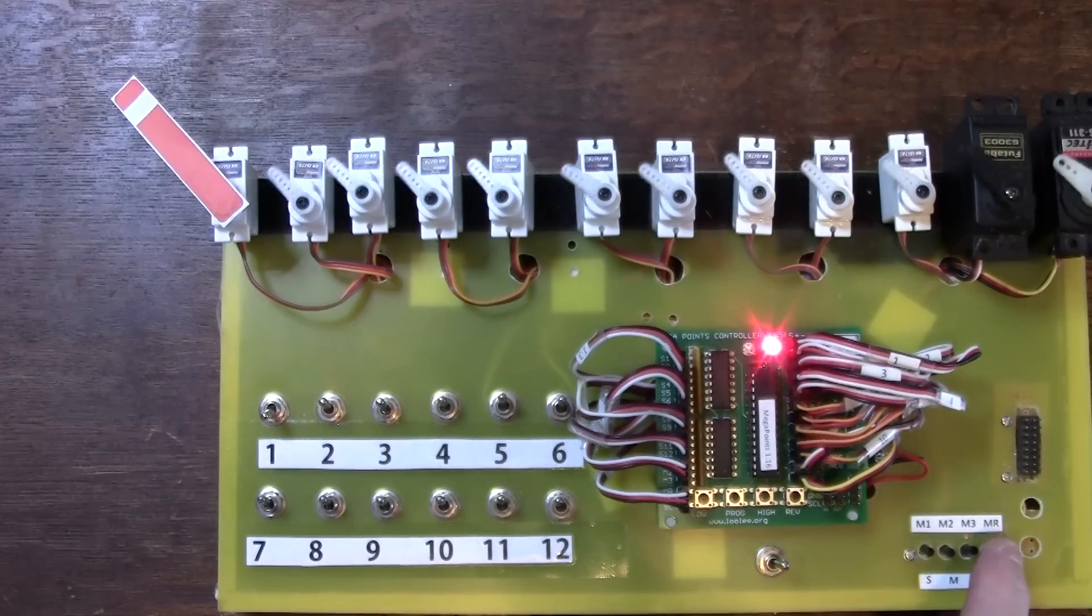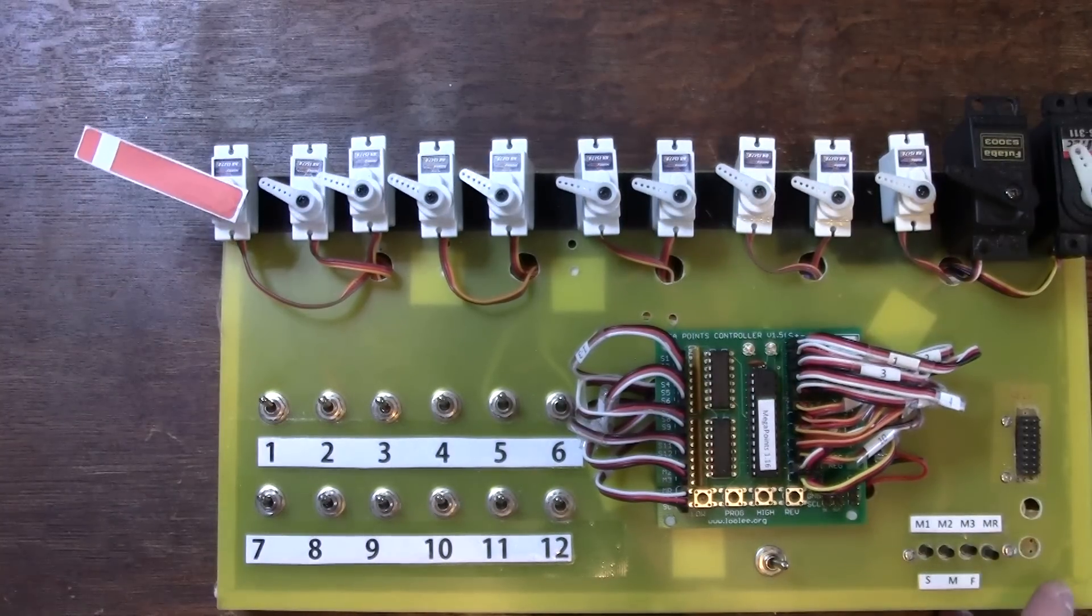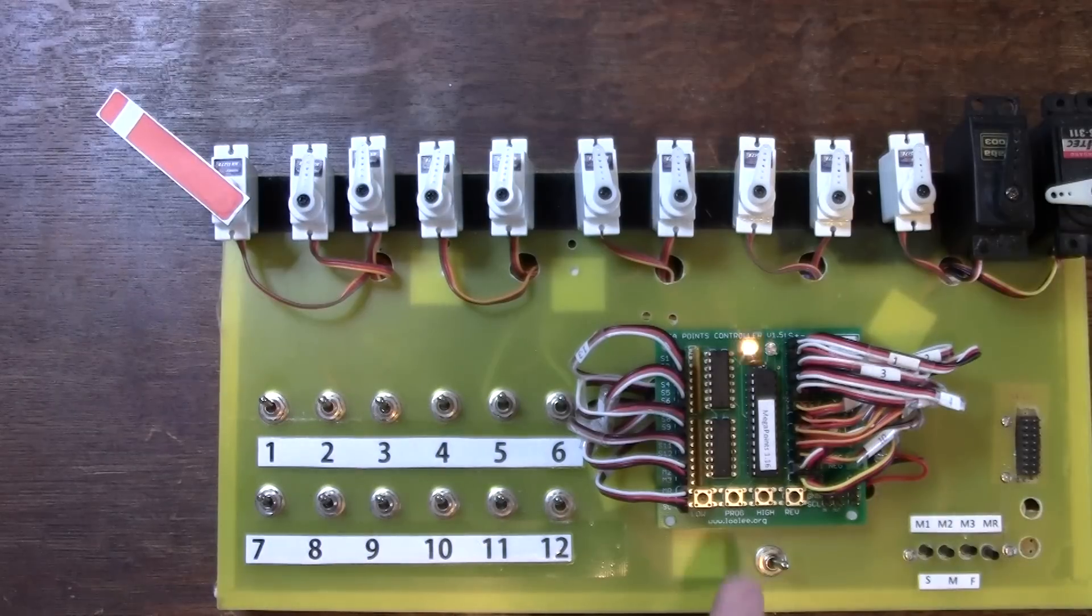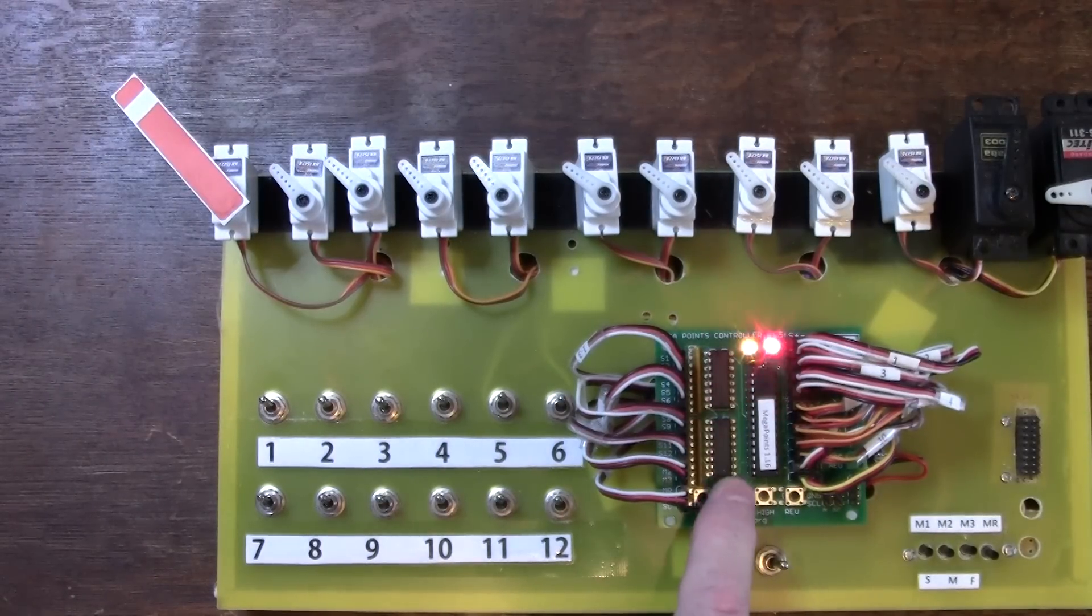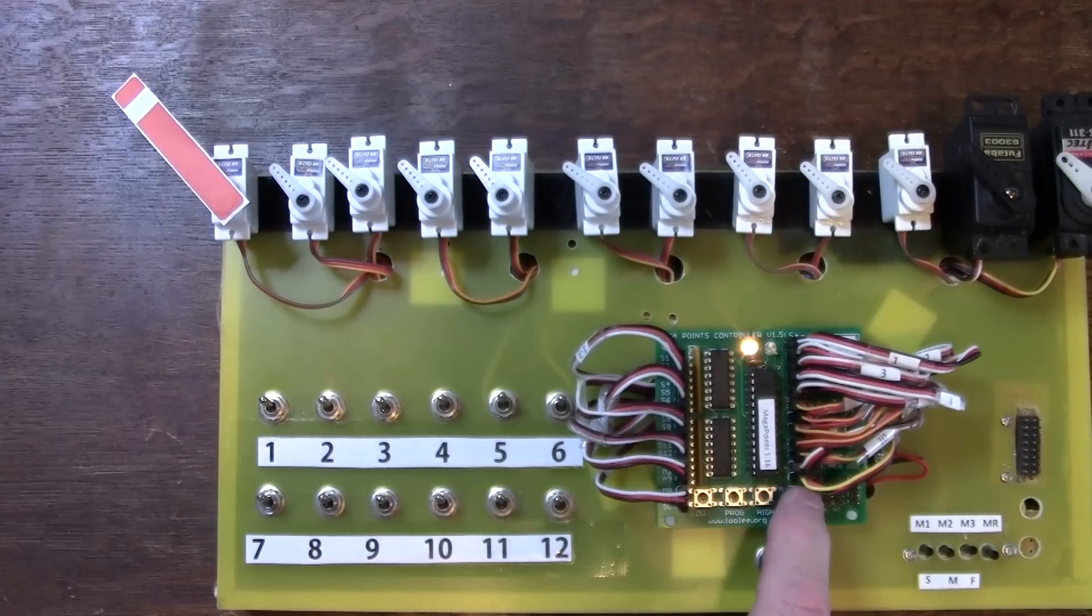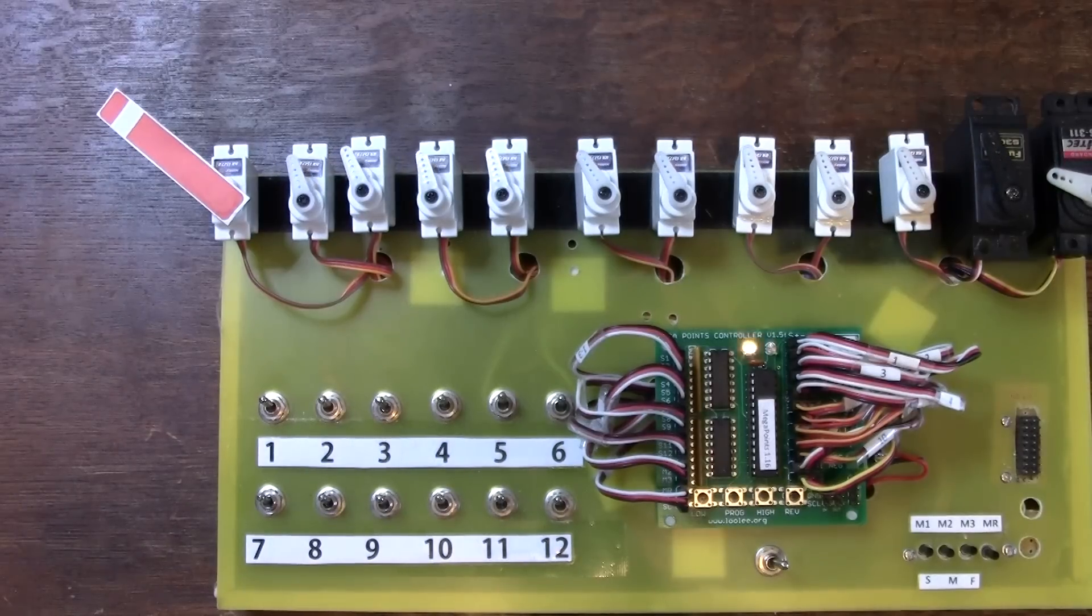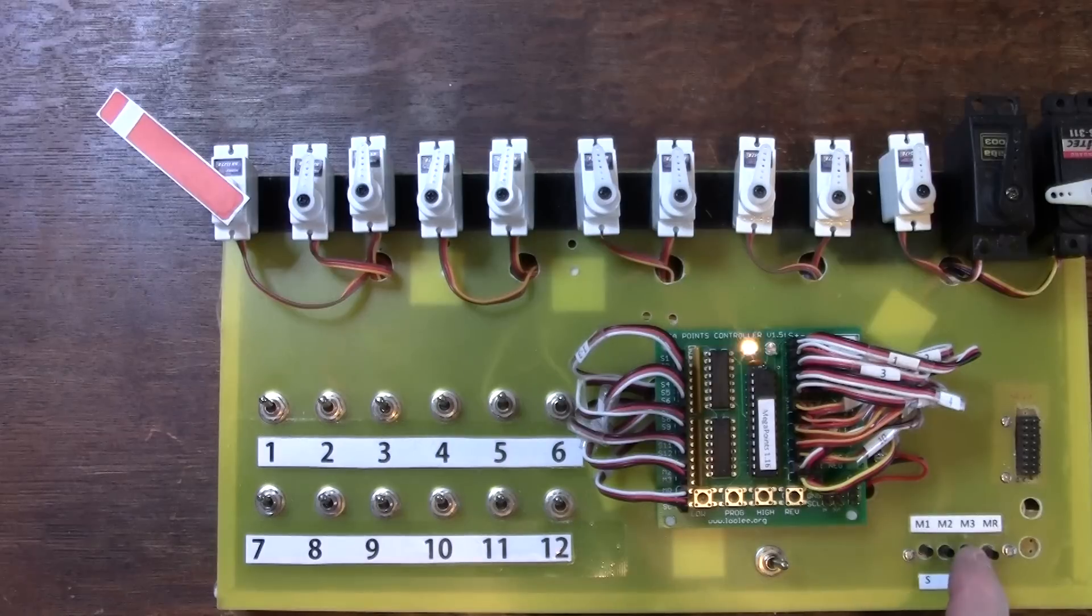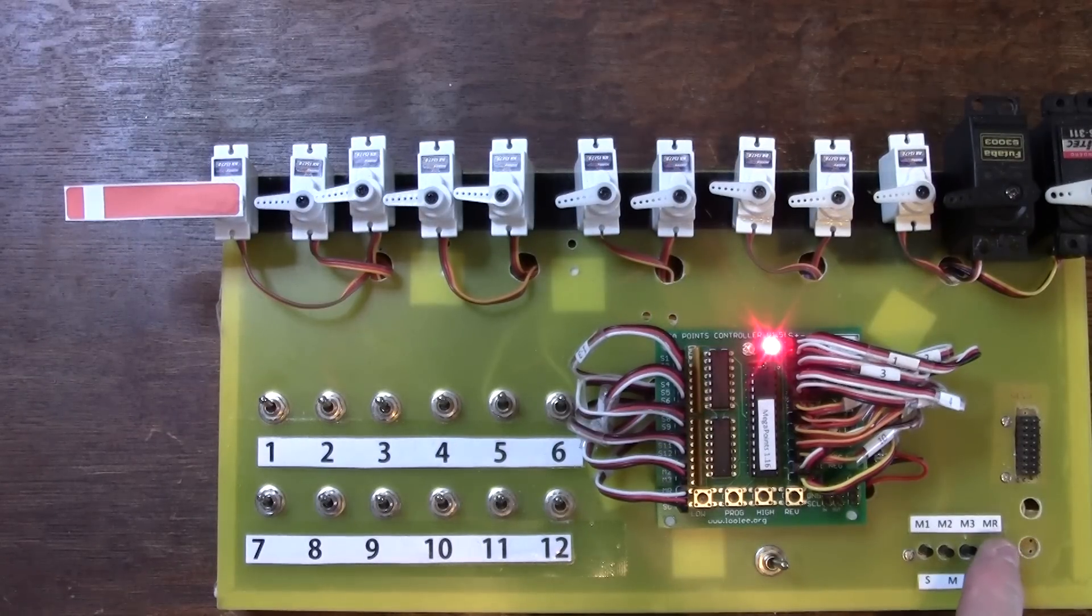So there we are, set for 12 semaphore signals. Let's bring on the memory and clear. You see the 12th output here, that servo is reversed. So instead of selecting program 3, I'll select program 4. Now everything's going the same way, bouncing at the bottom, moving to clear.